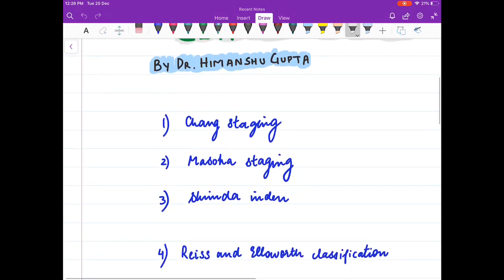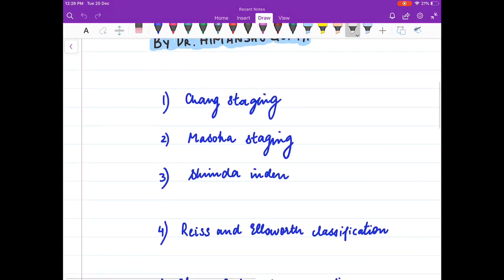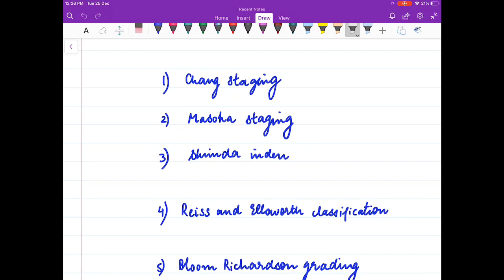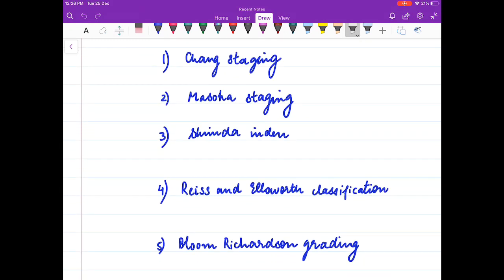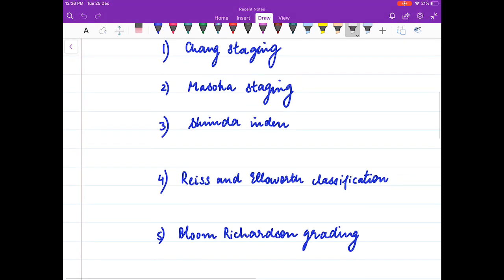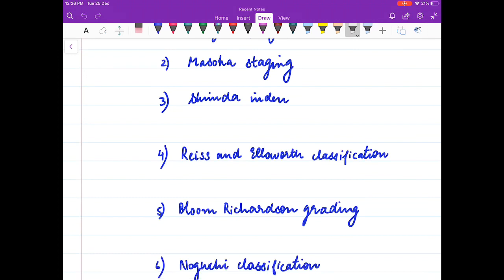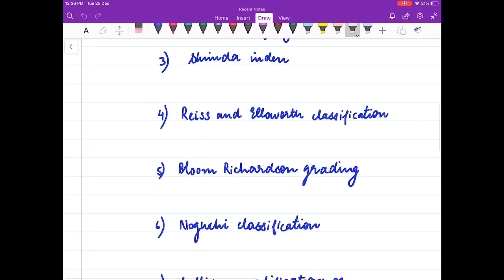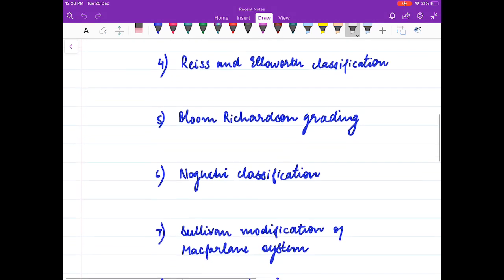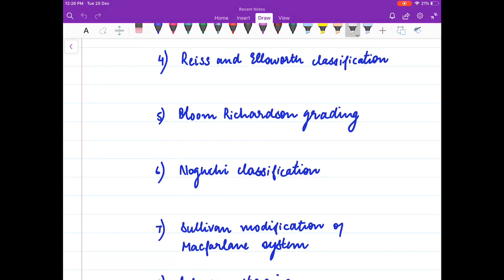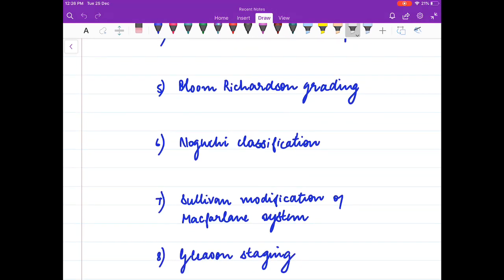Chang staging is seen in? Mesoka staging is seen in? Shimda index is seen in? Reese and Ellsworth classification is used for? Bloom Richardson grading is used for? Nogoochi classification is used for? Sulevan modification of Makparlana system is used for?